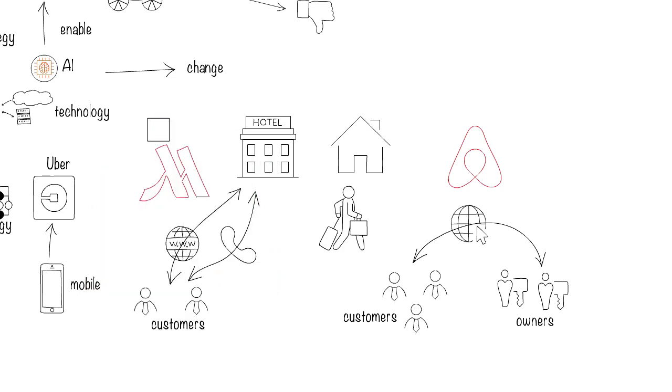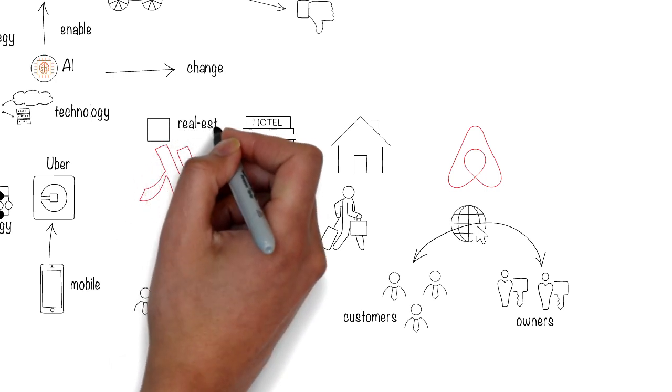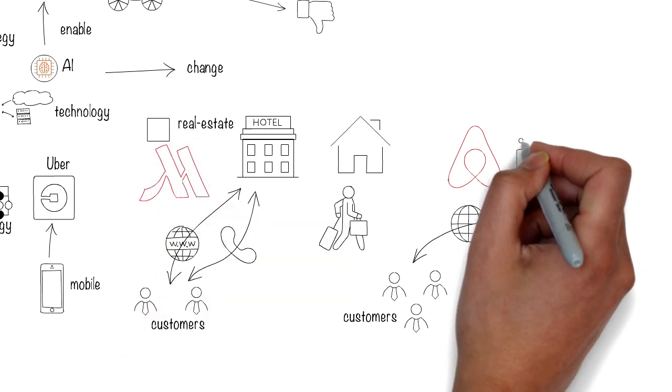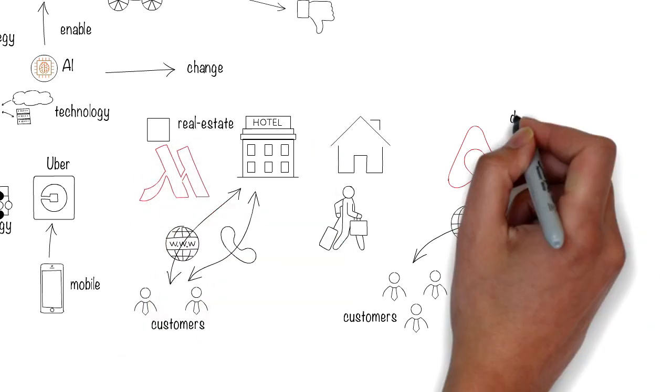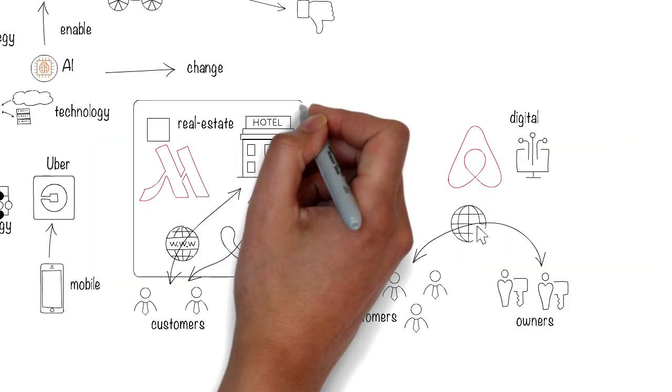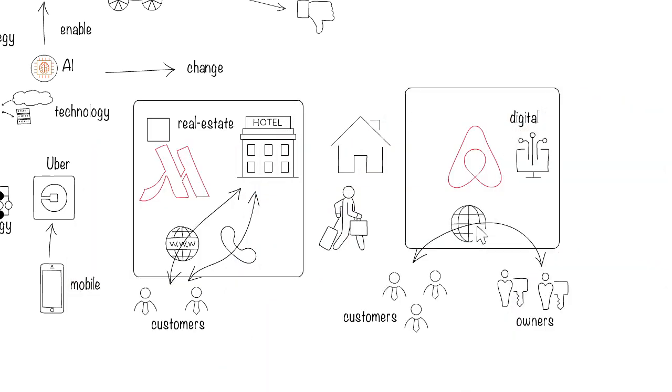Marriott's main assets are physical, with land and hotel rooms, while Airbnb's main assets are digital. Marriott owns its properties, Airbnb does not.